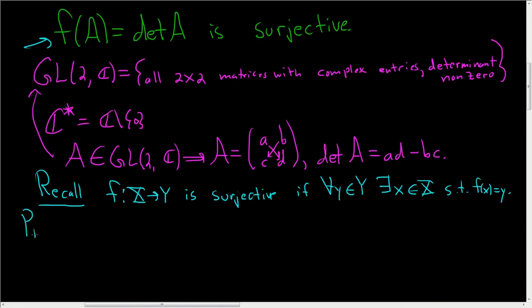So proof. I'm going to use a different color for the proof. Let's use yellow. So we'll start by taking, keep in mind, F maps this group into this set. Okay, so we have to take a y in our codomain, right? Our Y is the non-zero complex numbers. We have to show it's true for all y in Y. So take,